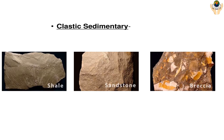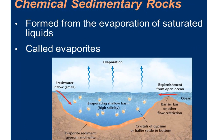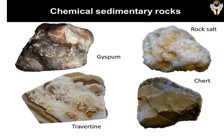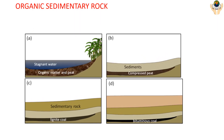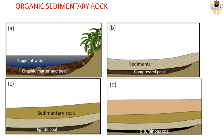Chemical sedimentary rocks are formed from the evaporation of saturated liquids, called evaporites. Examples of chemical sedimentary rocks include gypsum, rock salt, chert, and travertine.